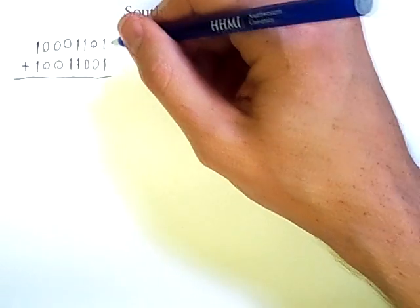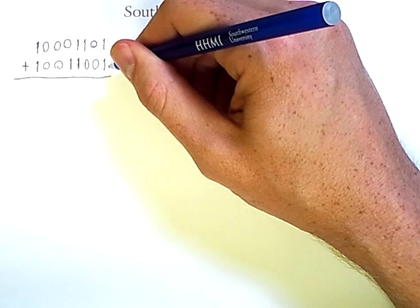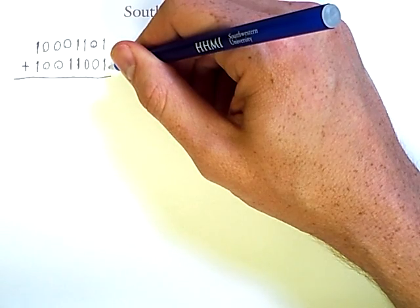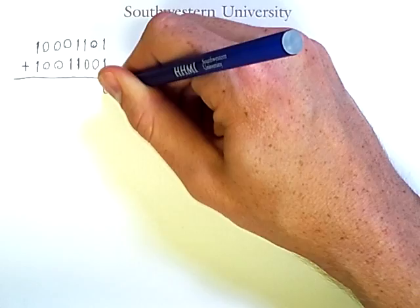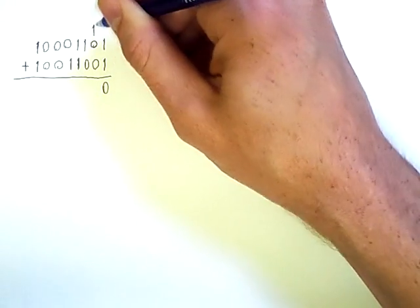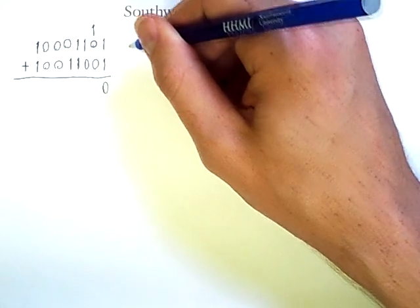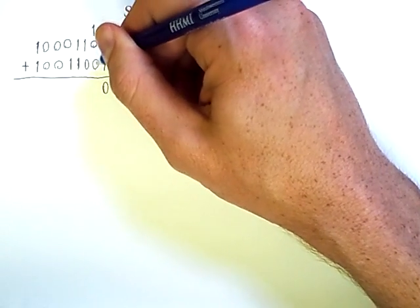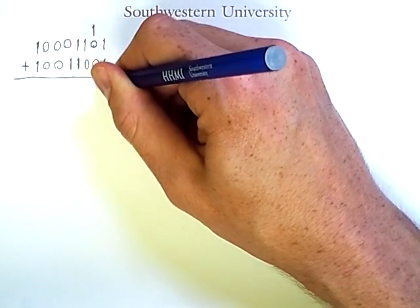For example, when I add one and one, the result is two. Because we're adding binary numbers, a zero goes in this column, and a one carries over to the next column. Now I am adding one, zero, and zero, and the result is one.